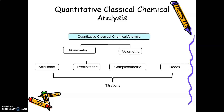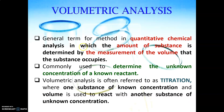For volumetric analysis, the definition is the quantitative chemical analysis where the amount of substance or the amount of analyte in a sample can be determined by the measurement of volume that the substance occupies. This analysis is usually used to determine unknown concentration of a solution, and it refers to a titration process where one substance of known concentration and volume is used to react with another substance of unknown concentration.